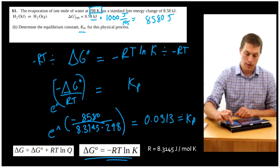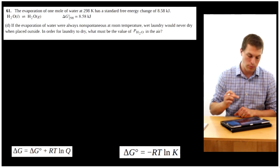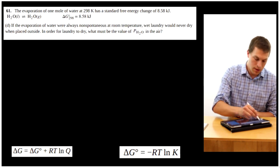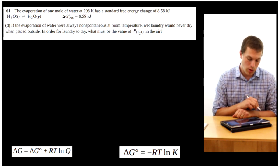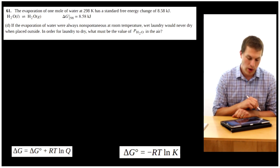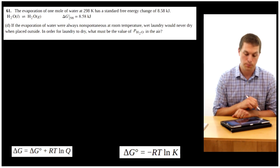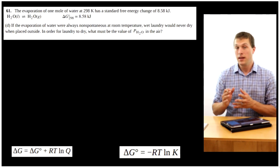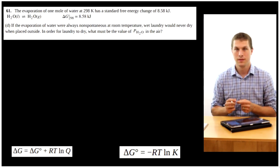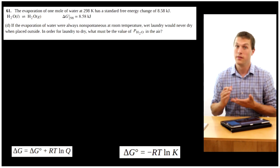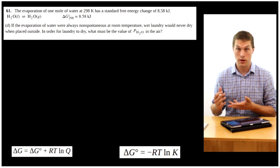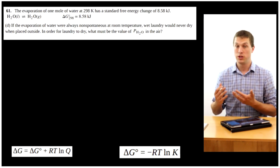All right, let's look at the next part of the problem. We're going to actually look at D before C, and I think you'll see why in a second. D is really related to what we just did. D says, if the evaporation of water were always non-spontaneous at room temperature, wet laundry would never dry when placed outside. In order for laundry to dry, what must the value of pH2O be in the air? So, what this is saying, right, is that if you put your wet laundry outside, it dries, usually, unless it's really humid. So you go to a really humid environment, it may take forever, or in some cases, your clothes would never dry. Depends on how much moisture is in the air.